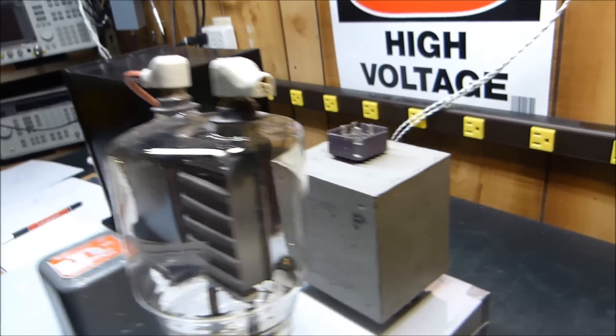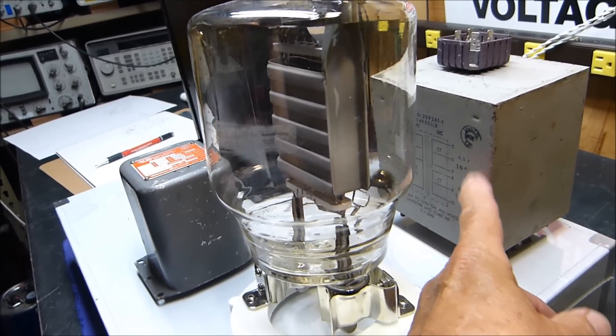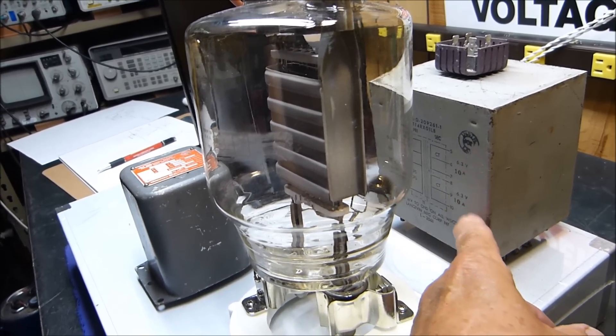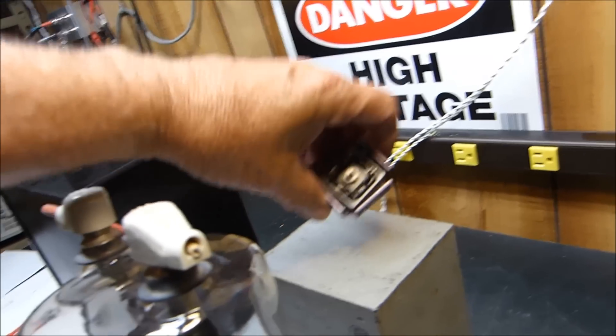Here's the filament transformer for it. These things take 10 volts at 10 amps to light it up. I'm going to use a 12.6 volt 10 amp so I've got plenty of current because I'm going to rectify it. You need to put DC on the filament or it'll hum.